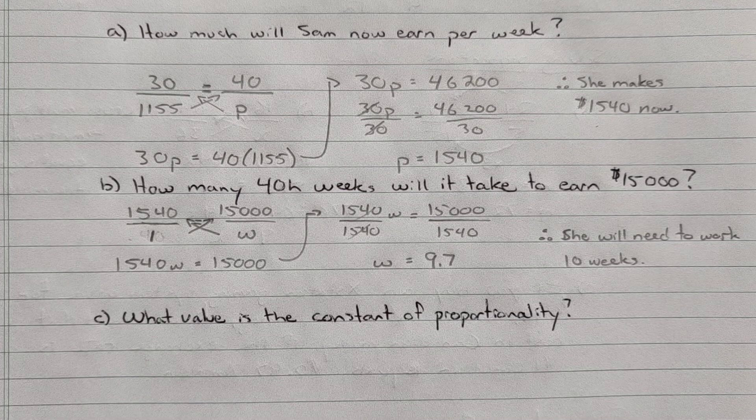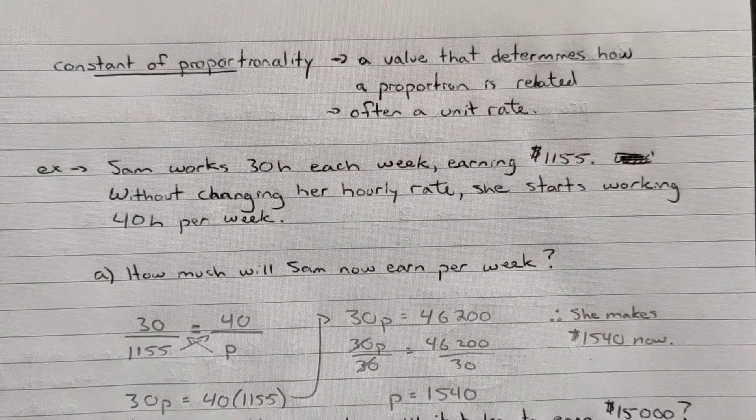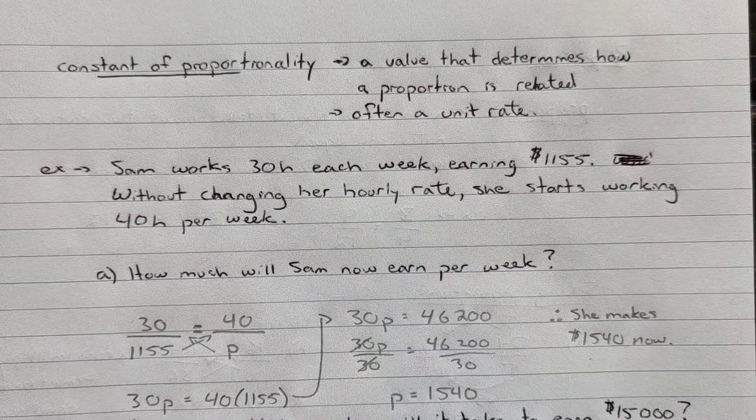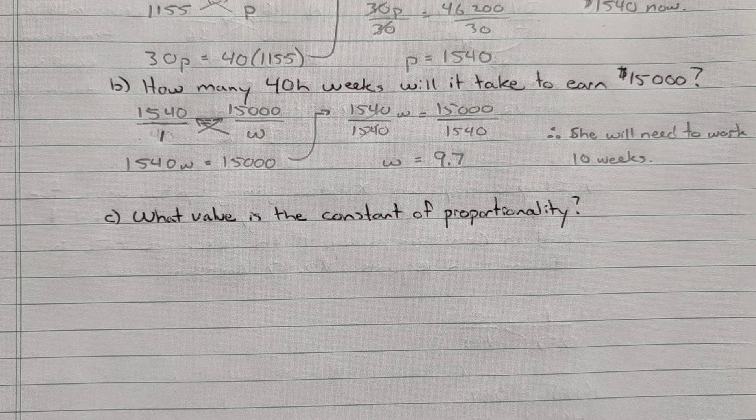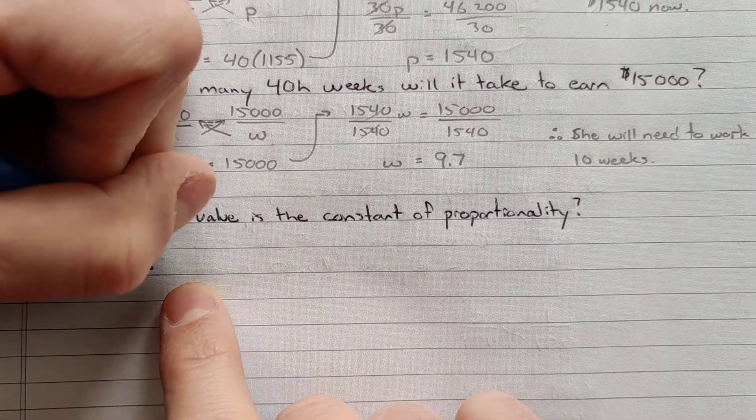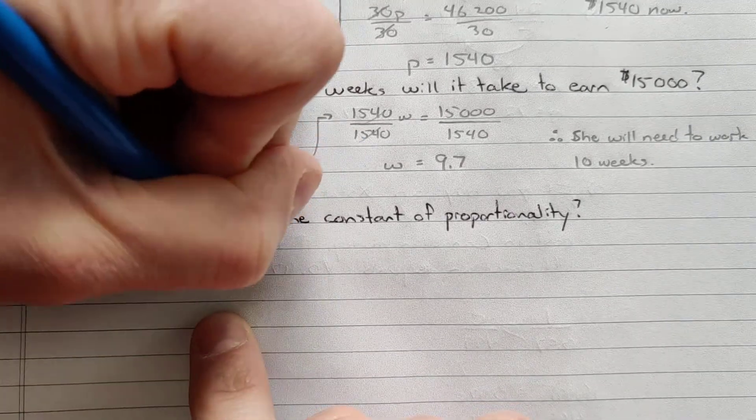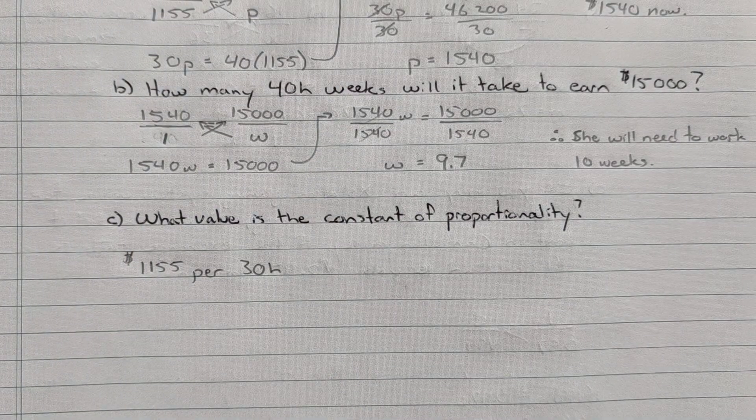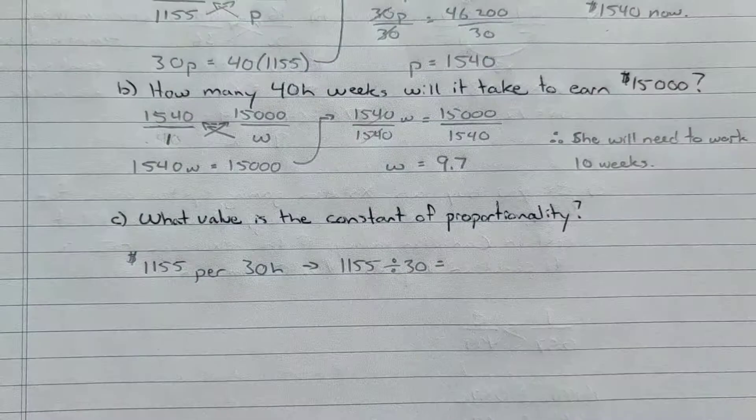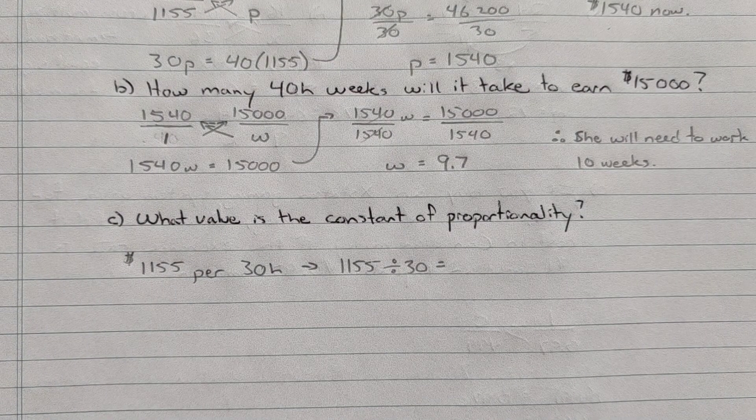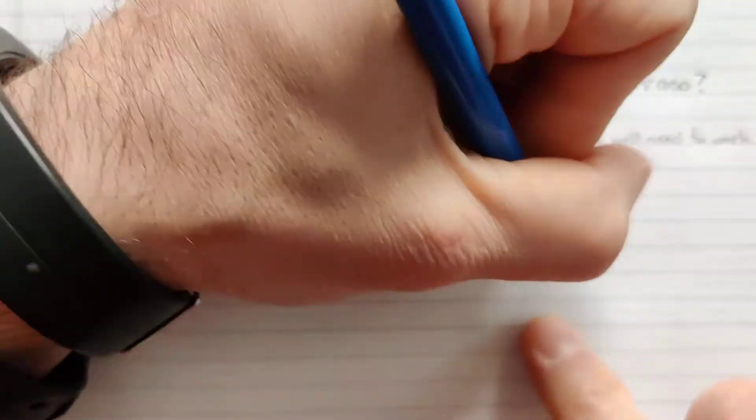So the last part here now gets into that constant proportionality. So what's the constant thing here? What's the constant value that's always not changing? Well, look at her question. What's the thing that doesn't change? It's her hourly rate. The amount of money she gets paid per hour is always the same. So our constant of proportionality is going to be how much does she get paid per hour? So we can take any of our values. I'm going to go right back to the start and she made $1,155 per 30 hours. So we just got to find the unit rate. That translates into $1,155 divided by 30 and that will give us $38 and 50 cents per hour.